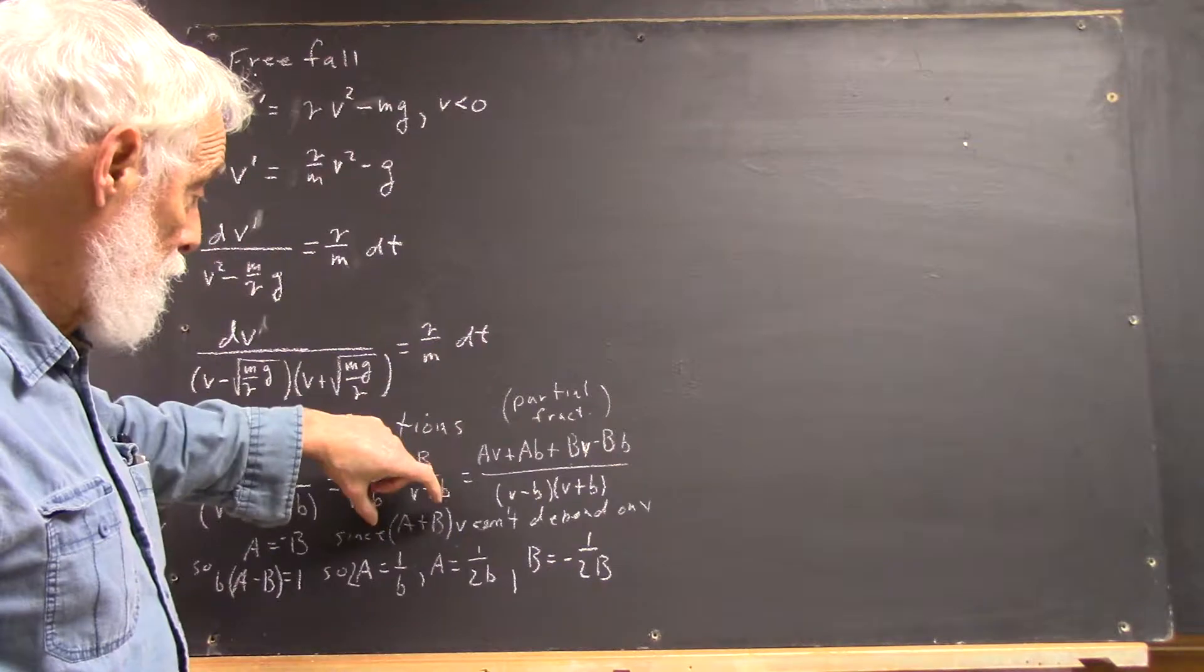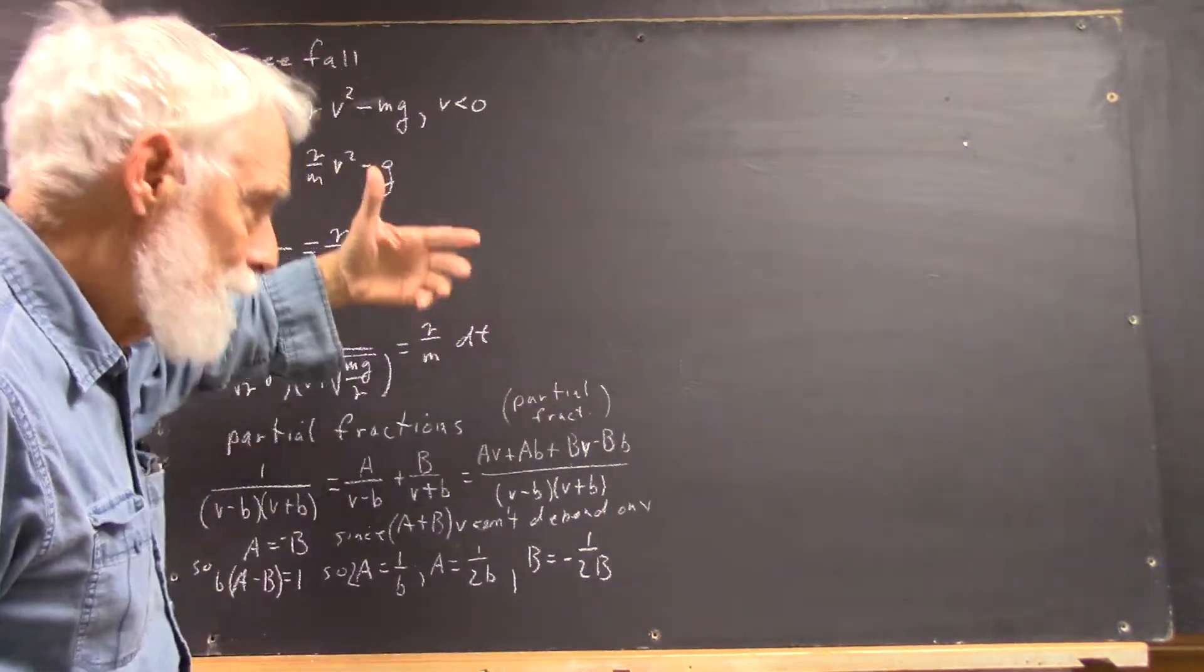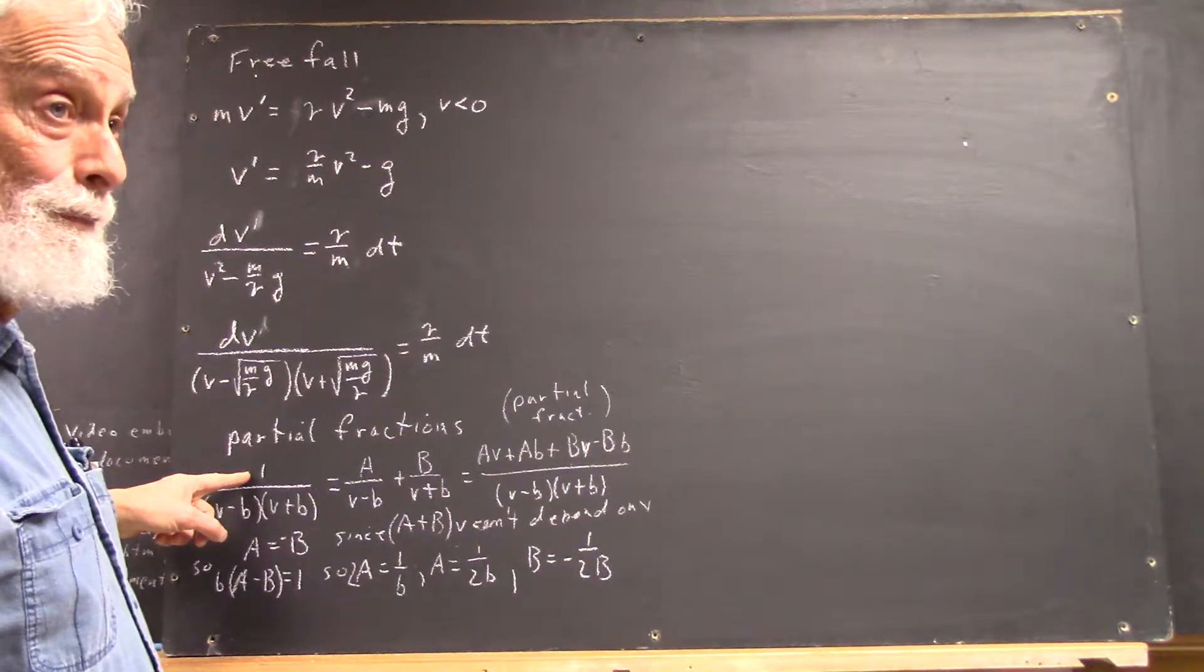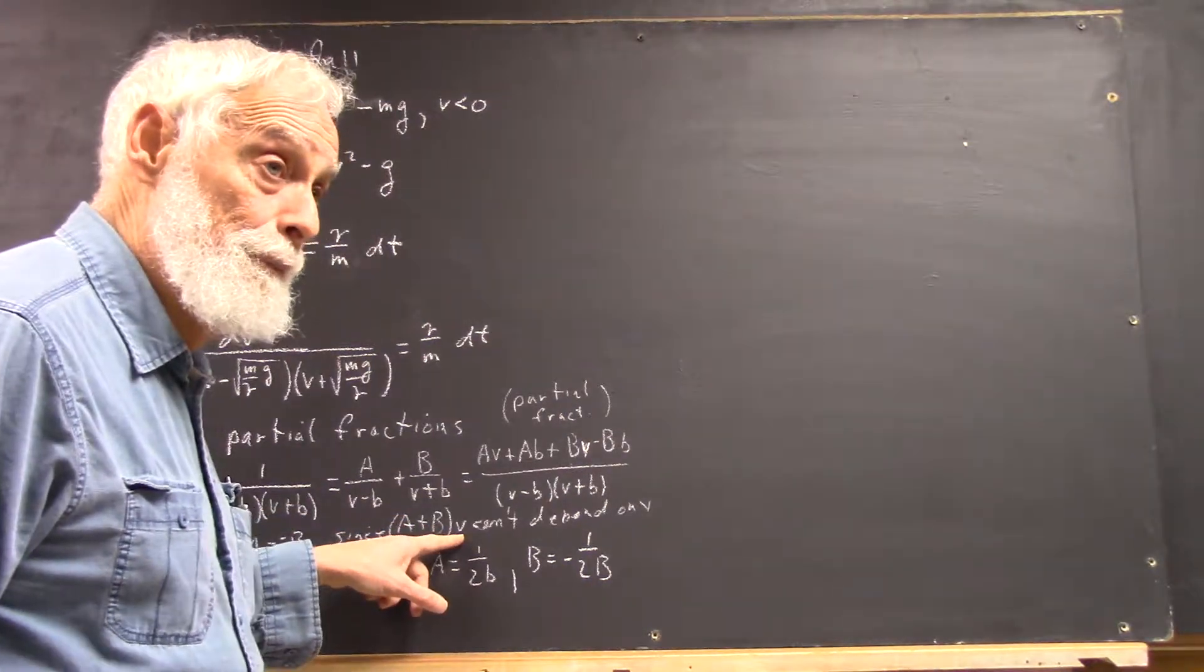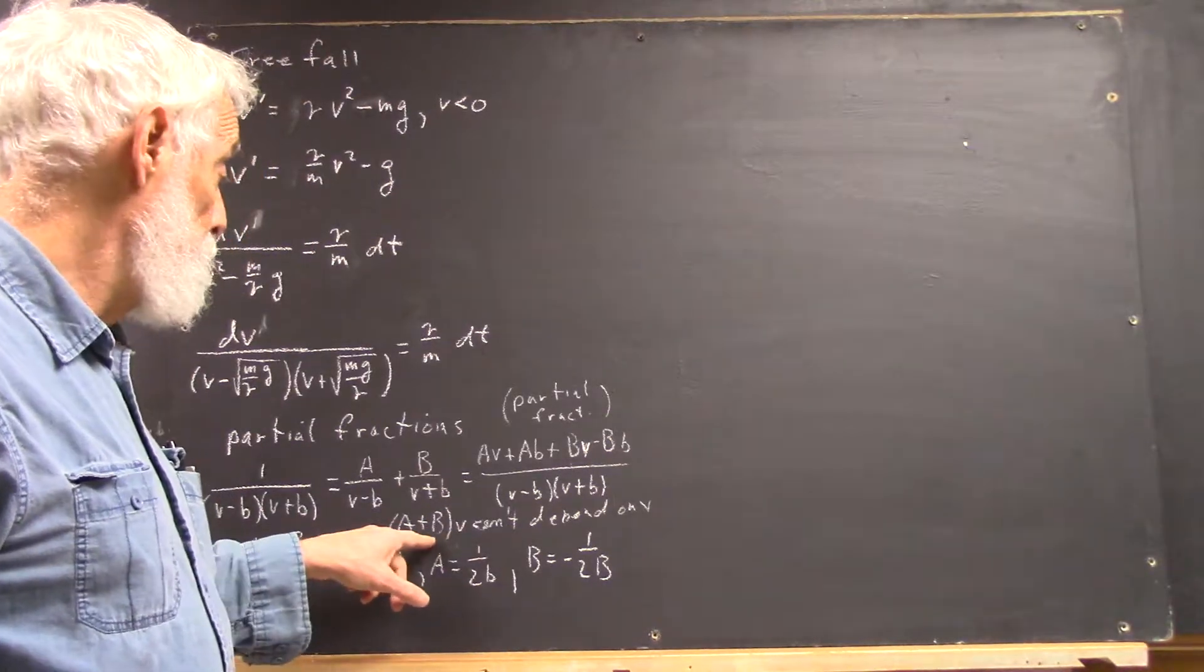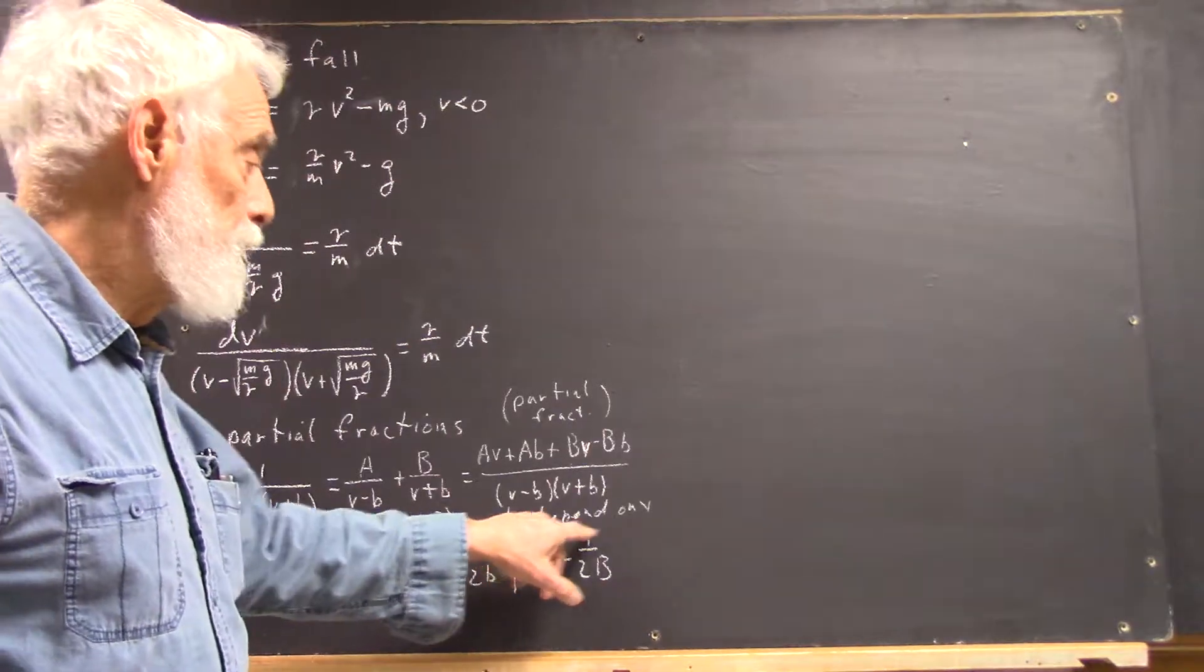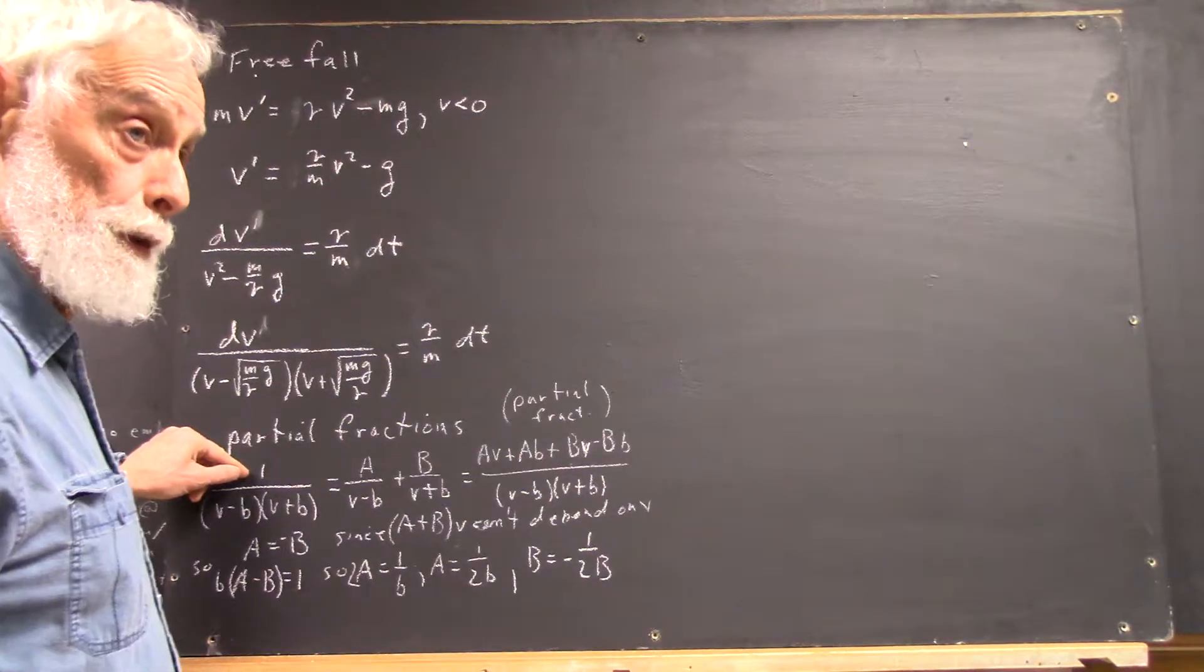Another way of saying that is, since the rest of this numerator is constant, and since the numerator is constant, A plus B times V can't be variable with V. And the only way that won't be variable with V is if A plus B is 0. If it did, that would make this numerator variable, it wouldn't be a constant 1.